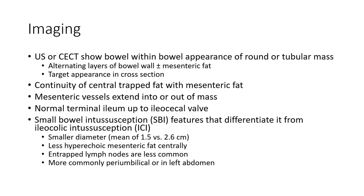On imaging — ultrasound or contrast CT — there is a bow-within-bow appearance of a round or tubular mass, with alternating layers of bowel wall plus or minus eccentric fat, and a target appearance in cross-section. There is continuity of the central mesenteric fat with mass-eccentric fat, and mesenteric vessels extending into or out of the mass. The normal terminal ileum extends up to the ileocecal valve.